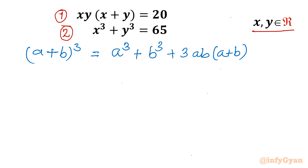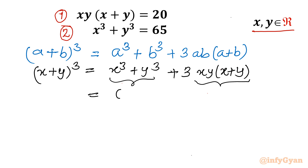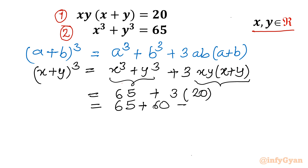Using this identity, we can see that the right-hand side gives us x³ + y³ (equation 2) plus 3·xy·(x + y) (equation 1). Substituting the values: (x + y)³ = 65 + 3 times 20, which is 65 + 60 = 125.